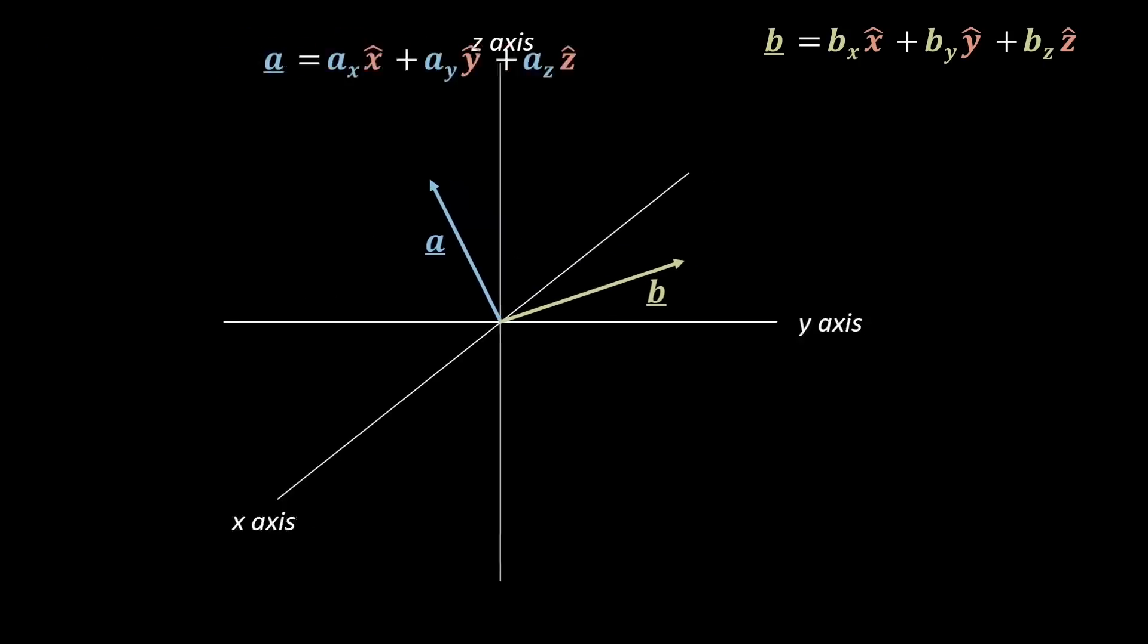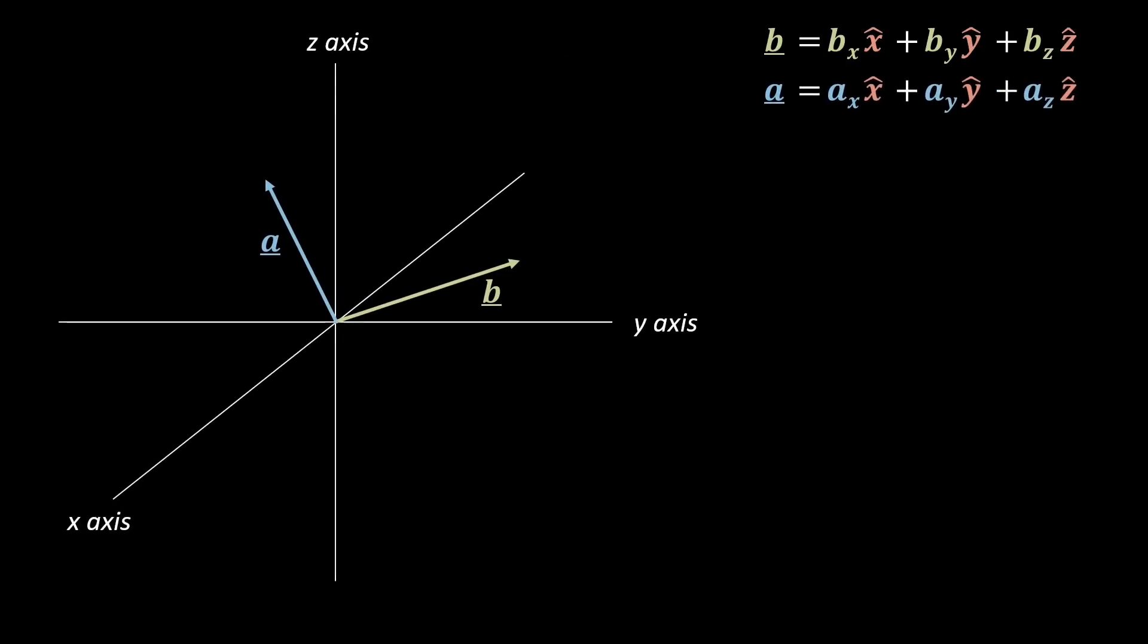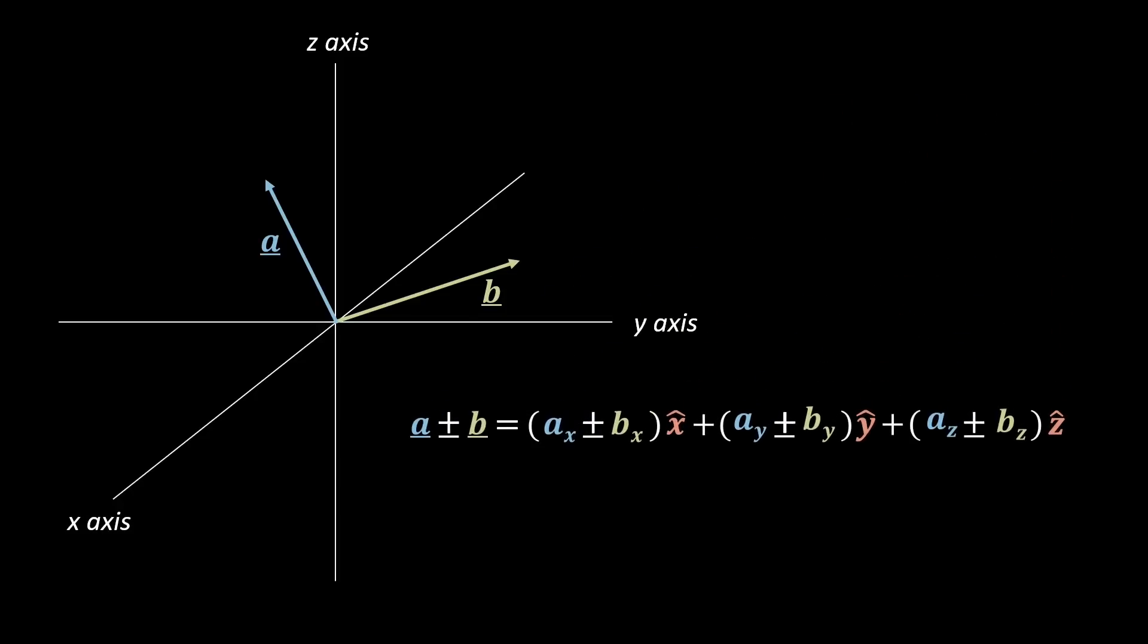To summarise, for each vectors a and b, we end up with this final expression for addition and subtraction, where the plus and minus is used to show each of the cases.